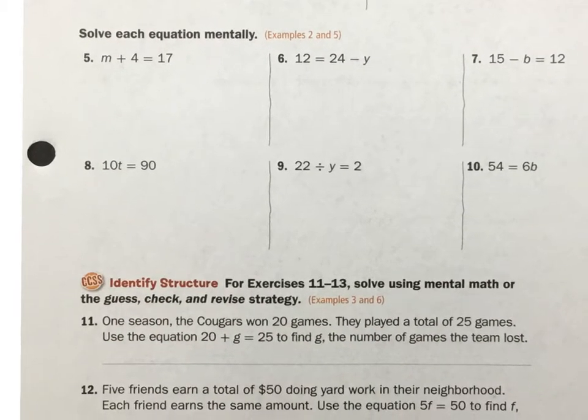Let's solve each of these mentally. Should be able to do these not too hard. I have something plus 4 is going to give me 17. If I have m being 10, 10 plus 4 is 14, so I need 3 more. Let's go 13. 13 plus 4, that equals 17. So m must equal 13.